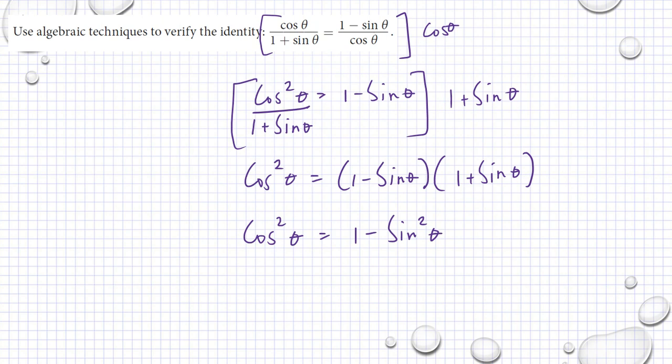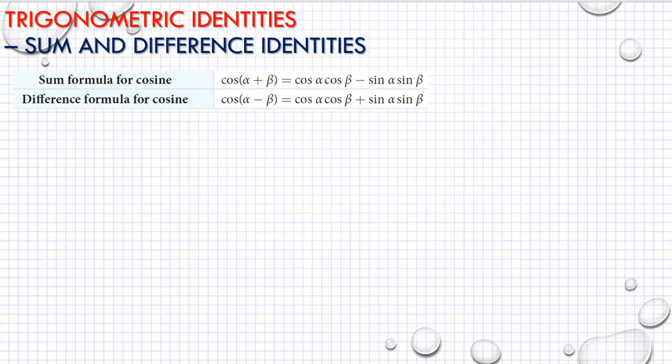Using the sum and difference of two terms, we have cosine squared theta is equal to 1 minus sine squared theta — the difference of two squares — and we know that these are equal. In my next video I will be discussing sum and difference identities, and I'll be giving you some proof of why these identities are identical and how we can use them in solving trigonometric identities. See you there, and thank you for watching — have a nice day!